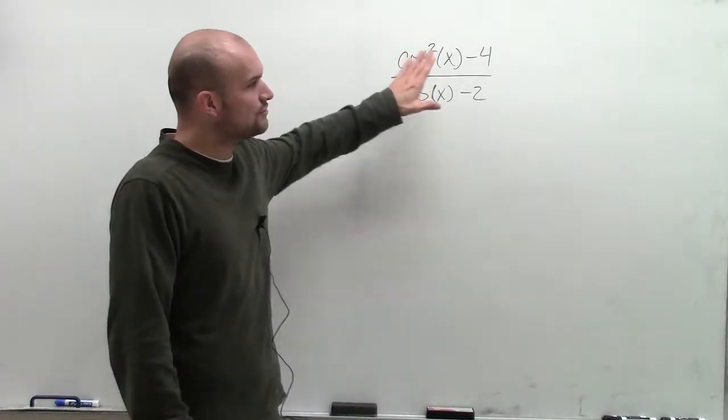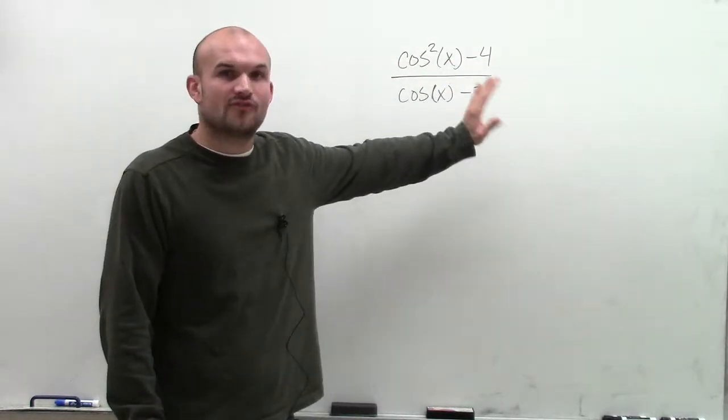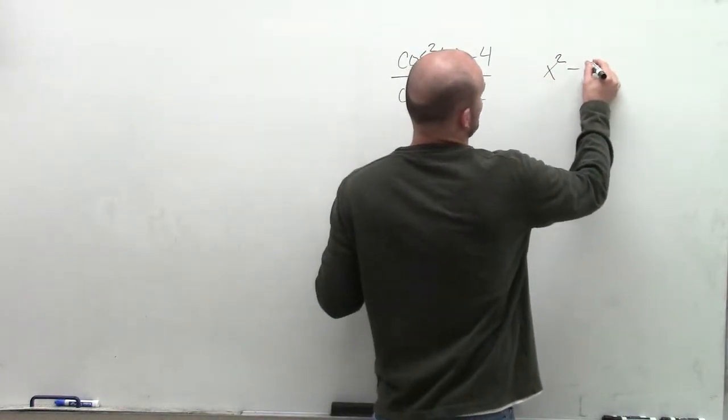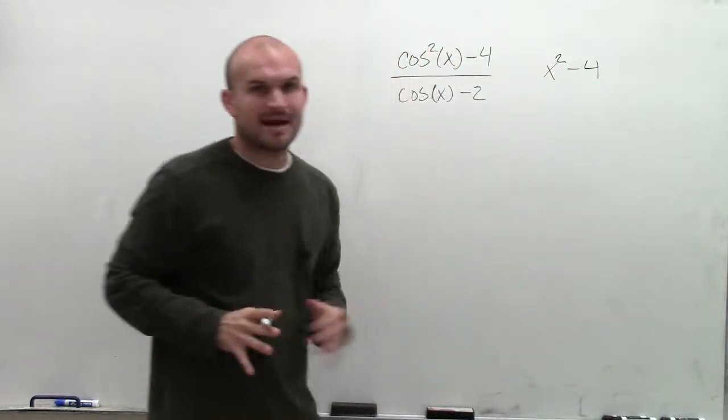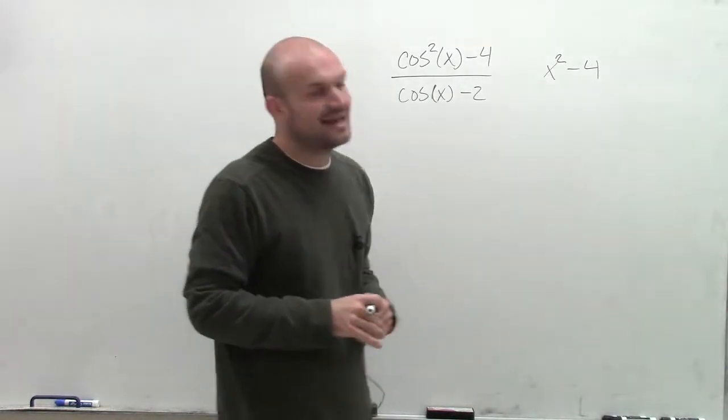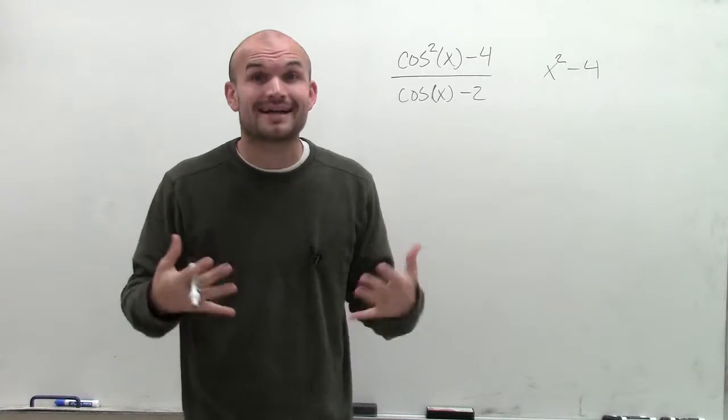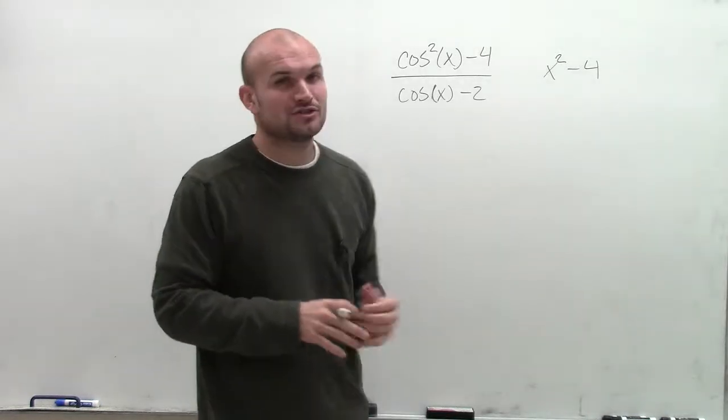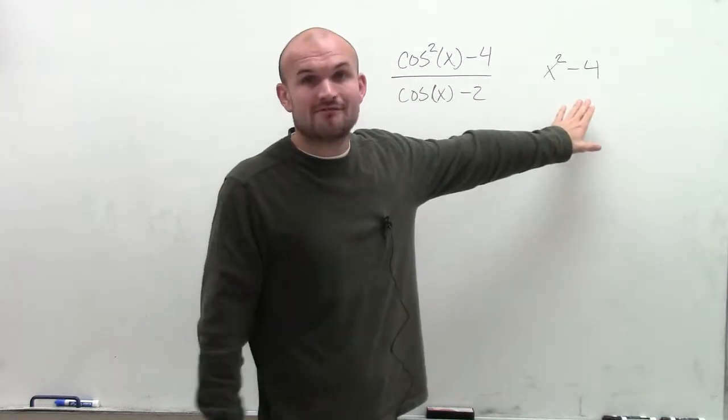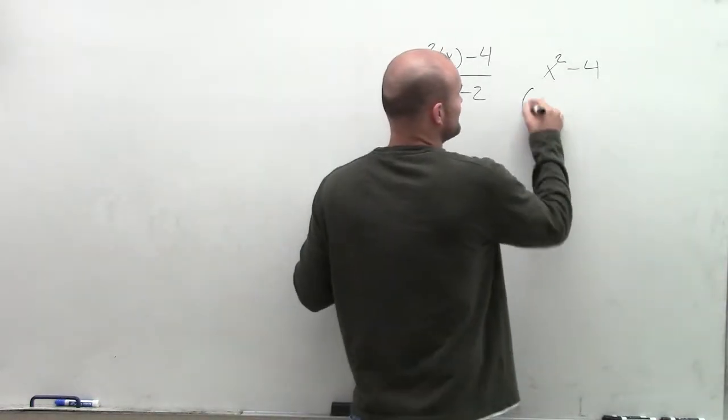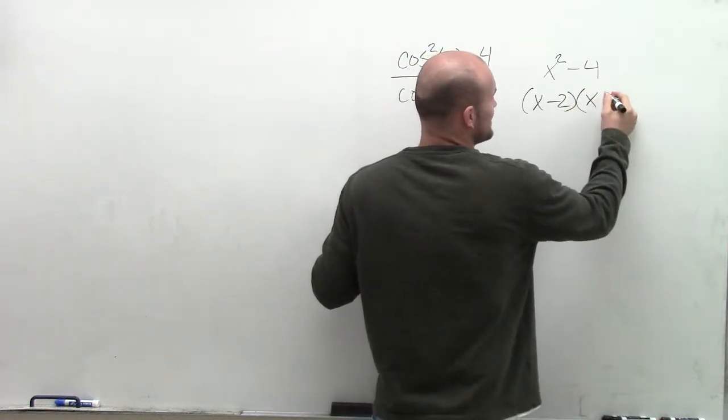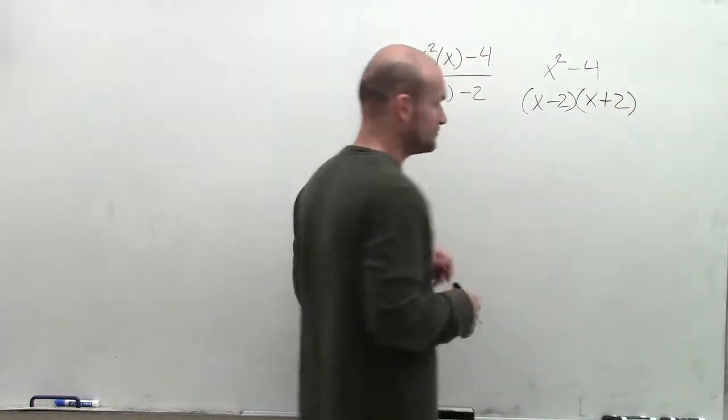Let's work on some easier numbers first to see how we can rewrite it. So if I had x squared minus 4, let's forget about trigonometry for a second. If you did a lot of factoring practice, hopefully you should recognize this is what we call a difference of two squares. If I was going to factor x squared minus 4, I can simply rewrite this as x minus 2 times x plus 2.